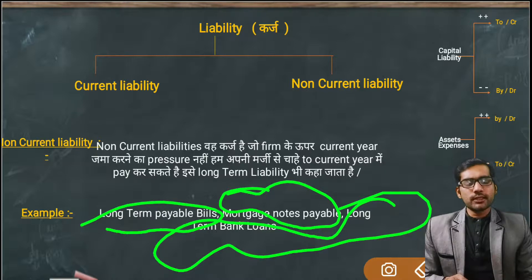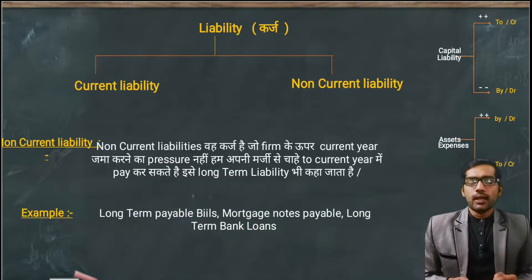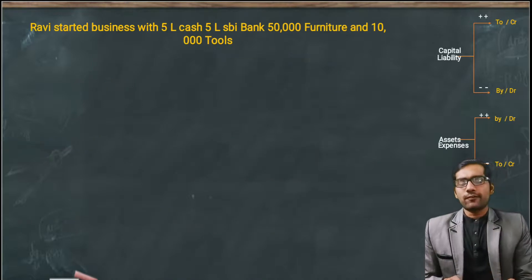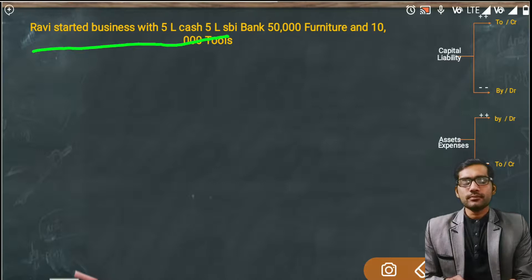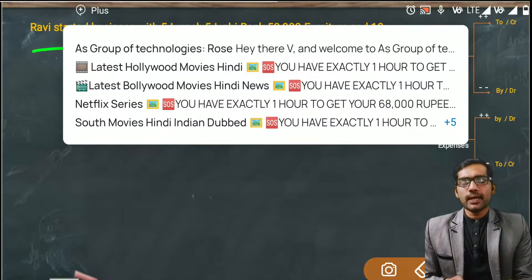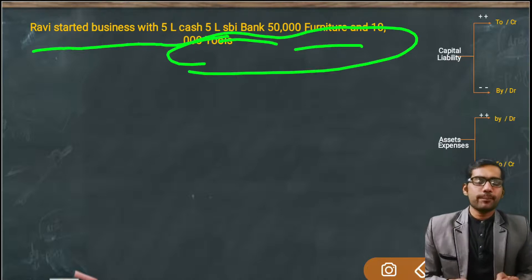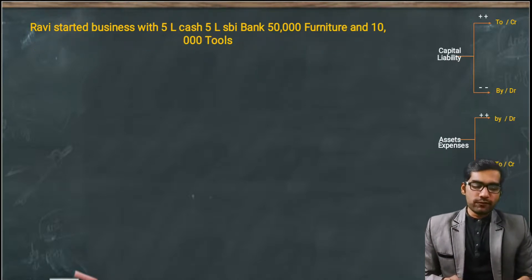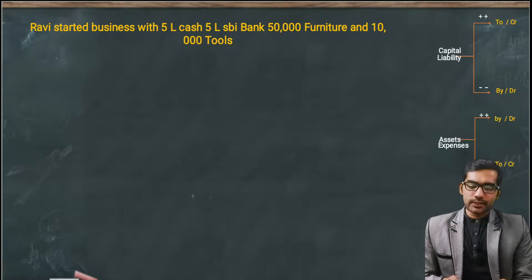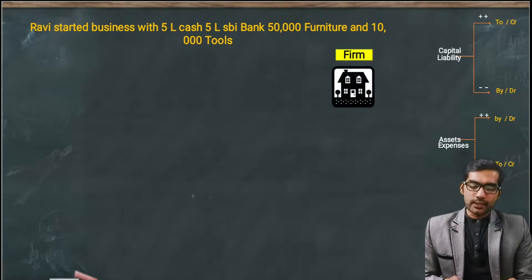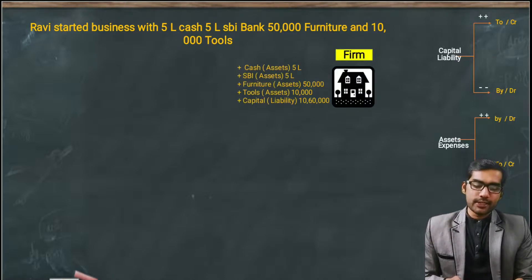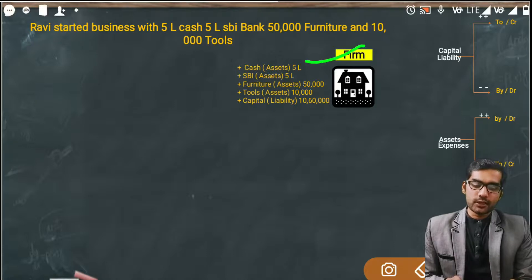Now let's look at some General Entries for practice. The entries are already written. Ravi started a business: 5 lakh cash, 5 lakh in SBI Bank, 50 thousand furniture, and 10 thousand tools. So Ravi started the business with 5 lakh cash, 5 lakh SBI Bank, 50 thousand furniture, and 10 thousand tools.